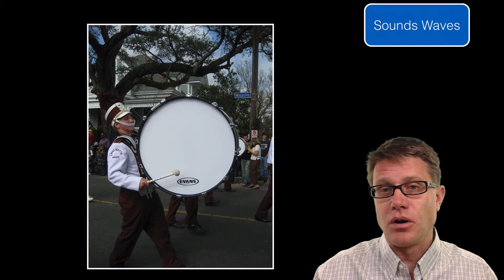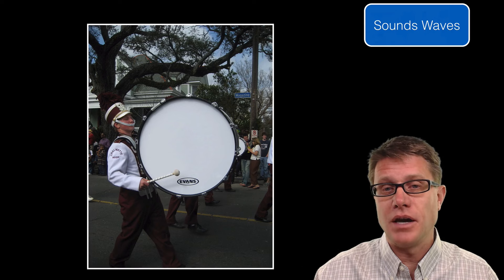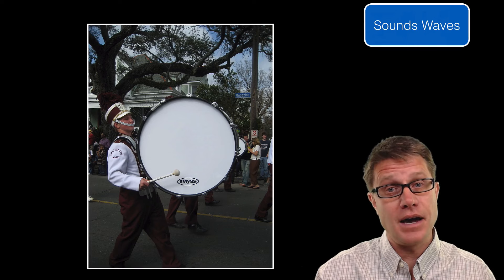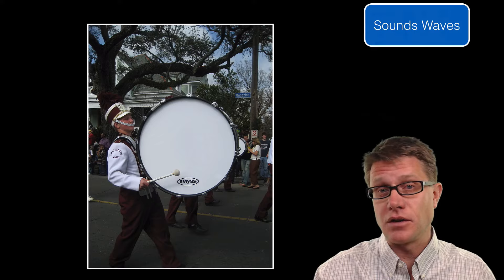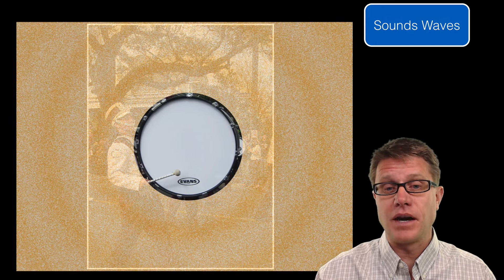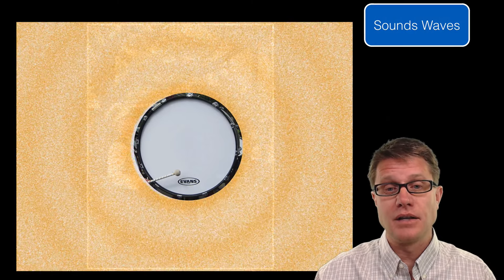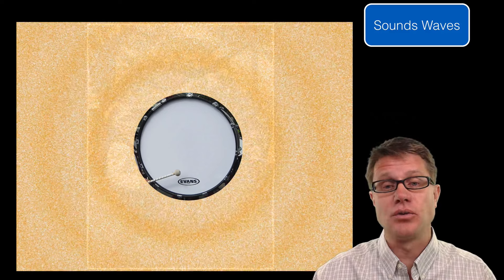An example of a mechanical wave that we are all familiar with is sound waves. So when you hit a bass drum like this it is very loud. But what you are really doing is vibrating the surface of the drum. And that is vibrating, if we look at it, it is vibrating all the air molecules around it.